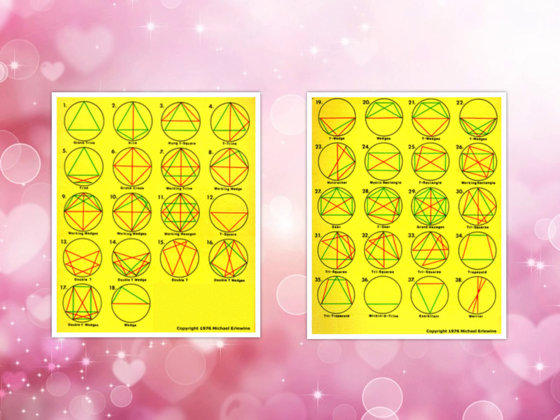After intensive research, I consider pattern completion a major ingredient for soulmate synastry. How does this work? For example, you have a grand trine and the other person makes a kite for you, or you have a wedge and the other person makes a mystic rectangle for you.